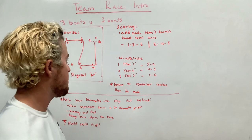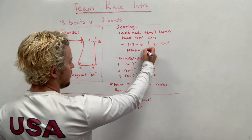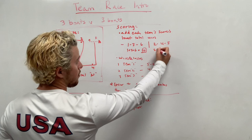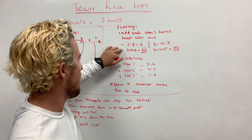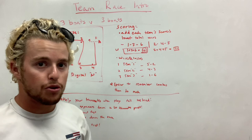So let's add them up. One plus three plus six equals ten, and on this side, two plus four plus five equals eleven. Therefore, the team on the left wins.